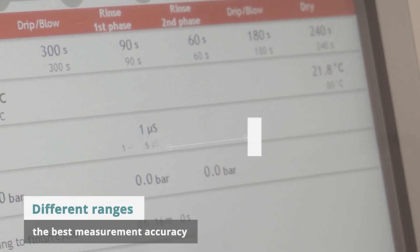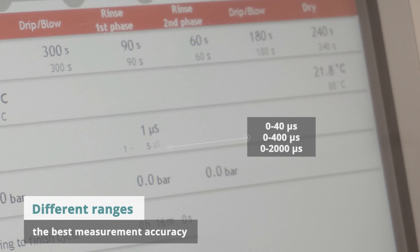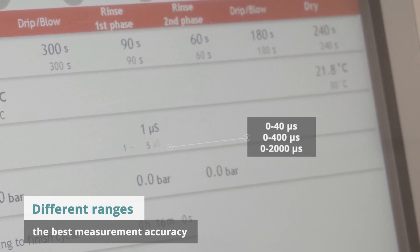Three different ranges can be selected: 0 to 40, 0 to 400, and 0 to 2000 micro Siemens.